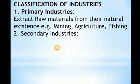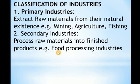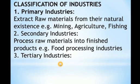Number two is secondary industries, and this is where this topic will mainly concentrate. These industries process raw materials into finished products. For example, food processing industries get raw materials from the primary sector and process them into finished products. You get milk from agriculture and make cheese or yogurt, or you get wheat and produce bread — that is food processing, which is secondary industry.